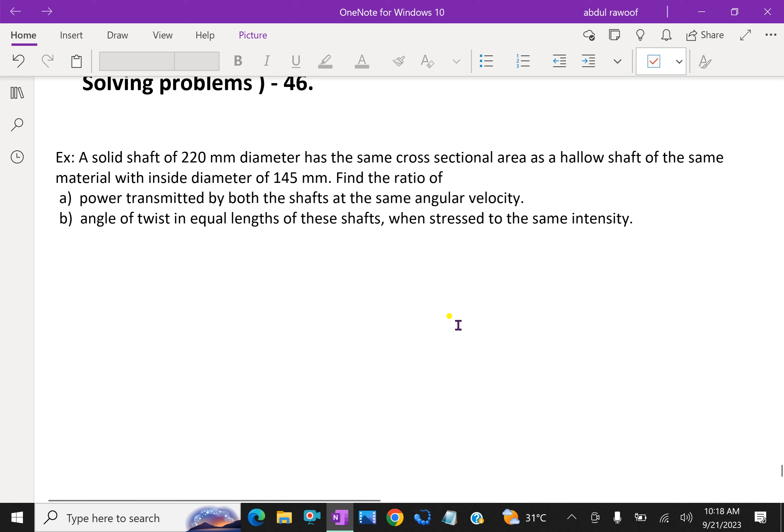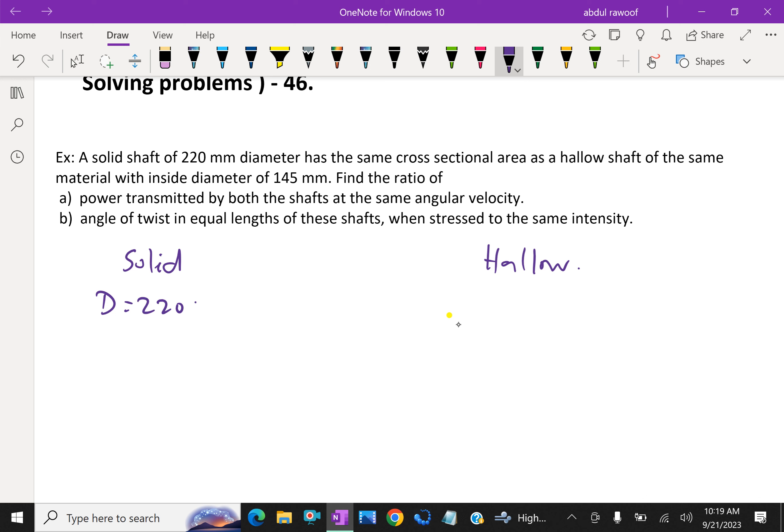Look at this first. Diameter of solid shaft - here we can write solid shaft, here hollow. Outer diameter is 220 mm, and the hollow shaft has the same material. The inside diameter is 145 mm. This is here D, inside diameter D is 145 mm.